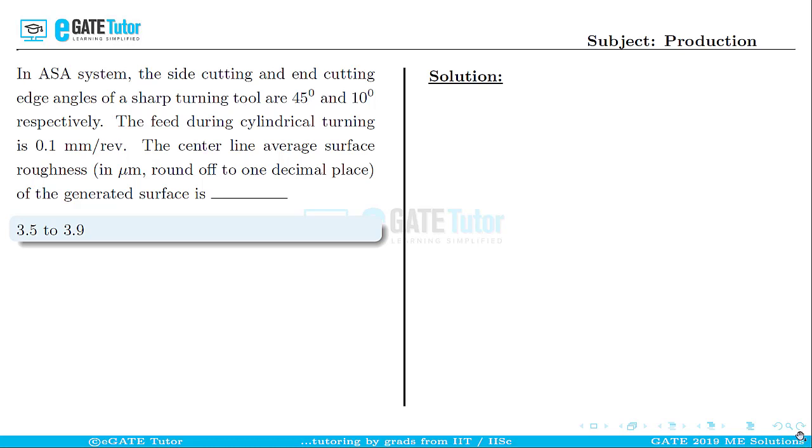First, let us write down the given values. The side cutting edge angle Cs = 45°. The end cutting edge angle Ce = 10°. The feed during cylindrical turning f = 0.1 mm/rev.